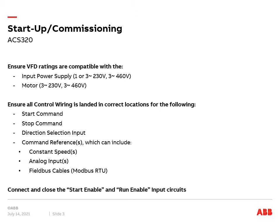Ensure any start enable or run enable safety interlocks are jumpered out in the control wiring. This is achieved by wiring either plus 24 volts DC or 0 volts DC to their respective digital inputs for either PNP or NPN wiring configurations.